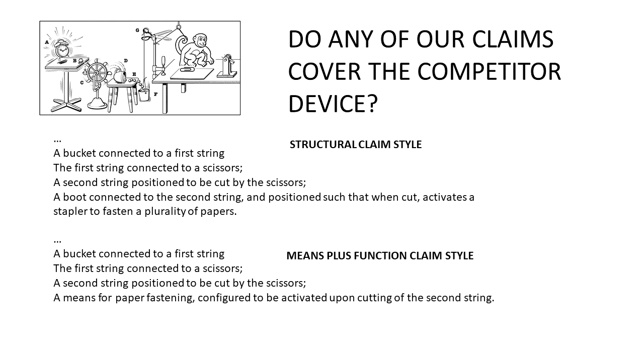So the bottom claim in the means plus function claim style looks promising though, because my competitor does have a means for paper fastening, and we have that in our claims. So do any of our claims cover the competitor device? Well, here's the catch.